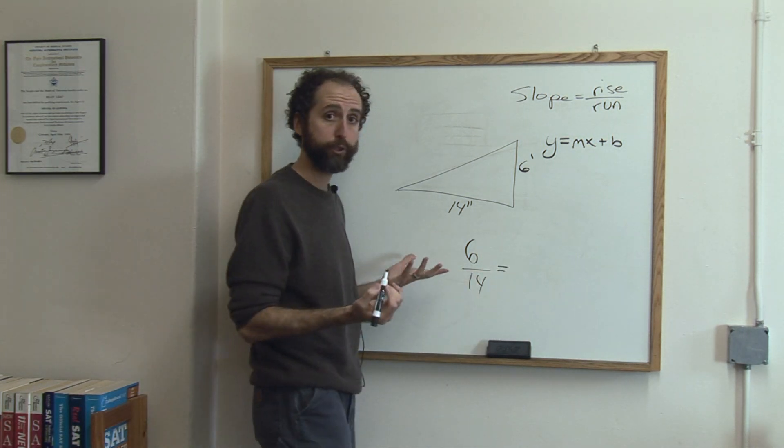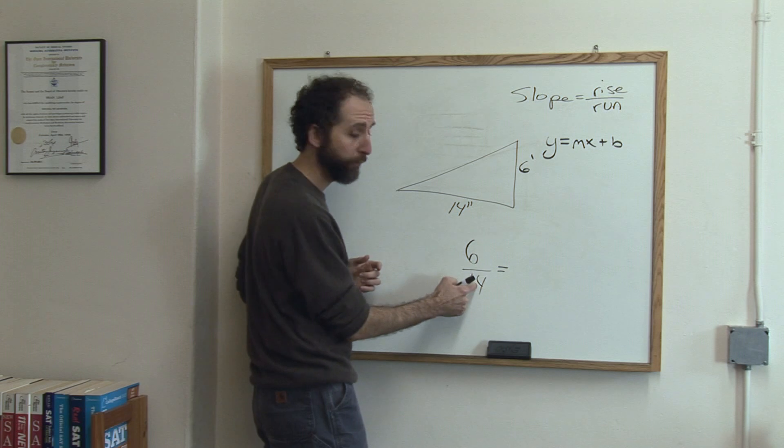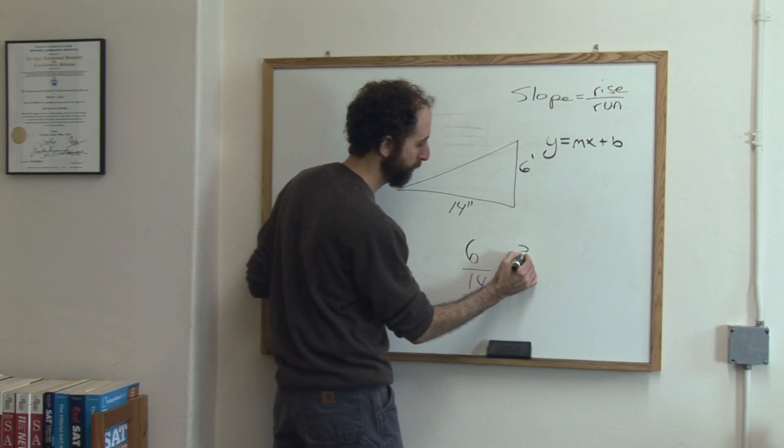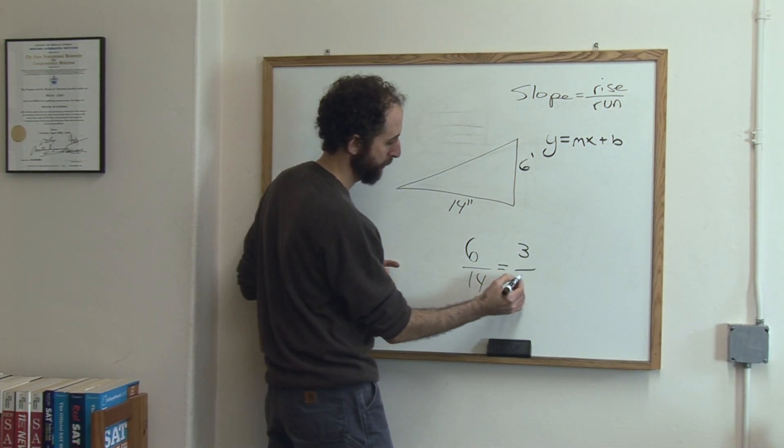And of course any time you can reduce you should. So we can divide this by 2 and that by 2. 6 divided by 2 is 3, 14 divided by 2 is 7.